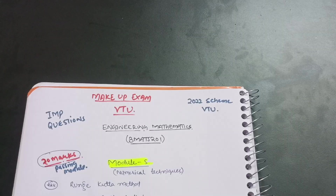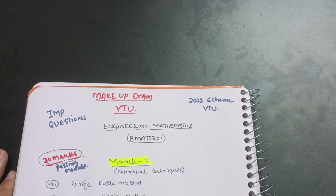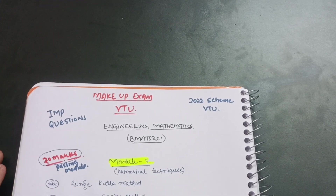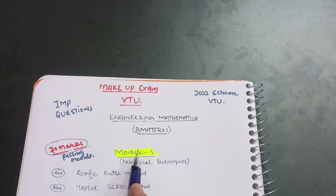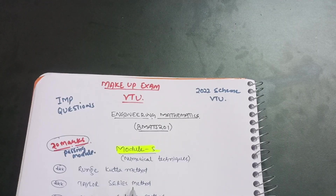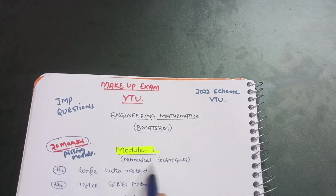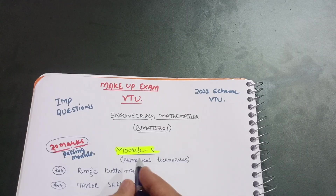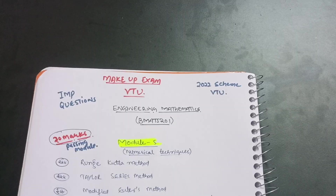If you want to pass this particular mathematics subject, you have to focus on three modules. You will easily conquer this subject by focusing on those three. First, tackle Module 5, which is the easiest one. These are numerical techniques or numerical methods where you just put in numerical values — 20 marks are just in your pocket.